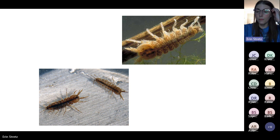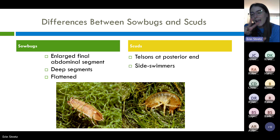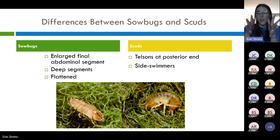To summarize the differences: sow bugs have that enlarged final abdominal segment, while scuds are more rounded with two small telson bits poking out at the end of the abdomen. Sow bugs are flattened from top to bottom; scuds are flattened from side to side and always swimming on their side.